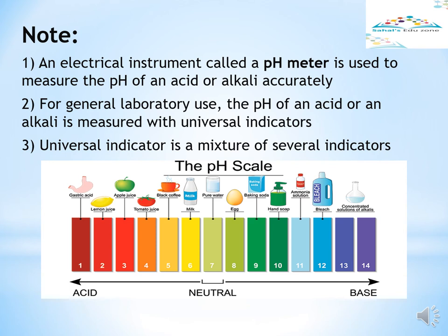Here are some examples. Apple juice has a pH value of 3. Baking soda has a pH value of 9. Milk has a pH value of 6. Black coffee has a pH value of 5.